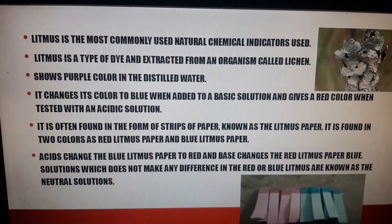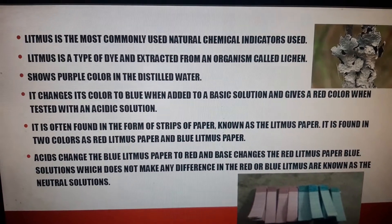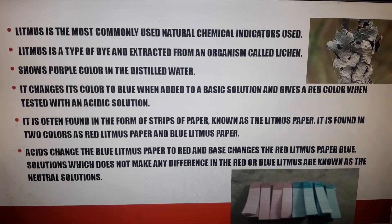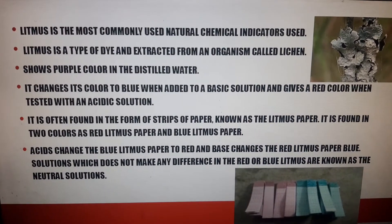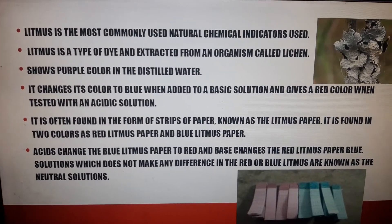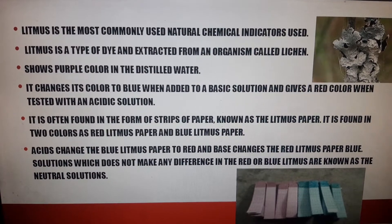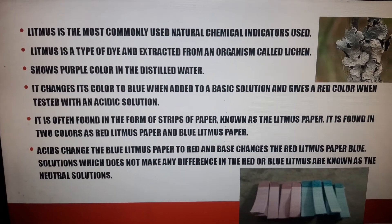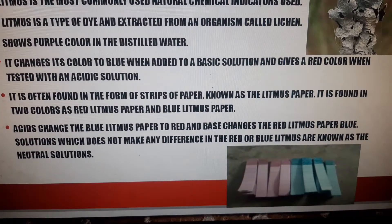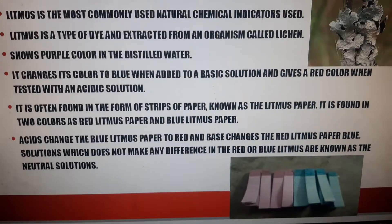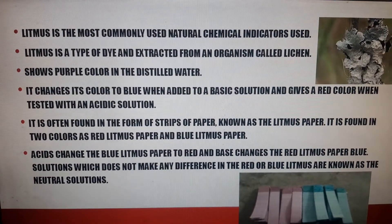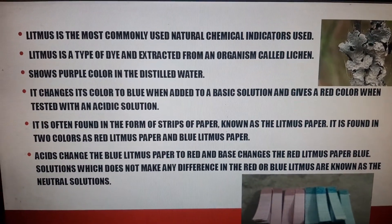Litmus is one of the most commonly used natural chemical indicators. It is extracted from an organism called lichen — I have given a diagram of lichen here. The color of litmus is usually purple in distilled water. You can get litmus in the form of a solution as well as in the form of paper — you can get a red litmus paper and a blue litmus paper. Litmus changes its color to blue when added to a basic solution, and gives a red color when added to an acidic solution.